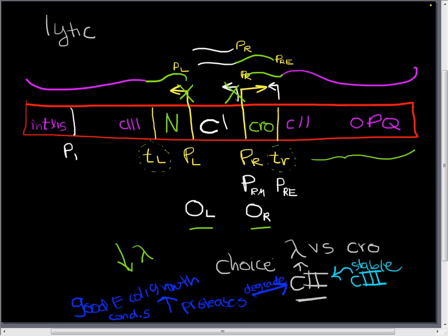So when there are good E. coli growth conditions, we tend to see more proteases in the E. coli. And these more proteases in the E. coli will degrade C2. And that will lead to low production of lambda. That means that there's going to be more crow around, and this will go into the lytic cycle.